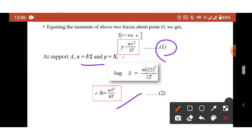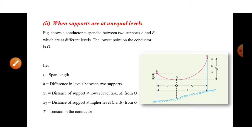So the general equation for sag when supports are at equal levels is S = WL²/8T. Now let us consider the second case — when supports are at unequal levels. In hilly areas, supports will be at two different levels, so we calculate sag for such cases.